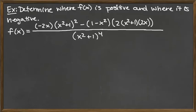For this example, we're going to be determining where the function given here — a pretty complicated rational function — is positive and where it's negative. This complicated-looking rational function is actually the form the second derivative of a pretty simple rational function would take. In calculus, when you are solving these nonlinear inequalities, those you're solving are going to be first derivatives and second derivatives. The first challenge to solving the nonlinear inequality is to get the function in a form you can work with.